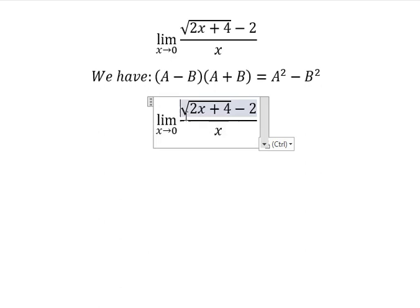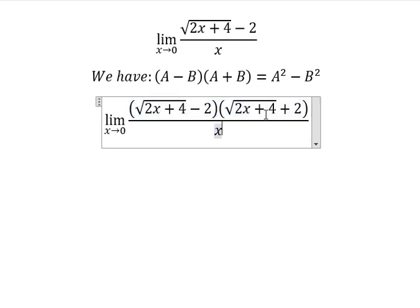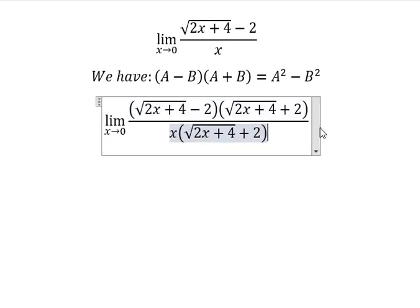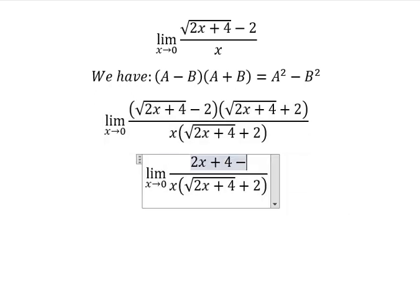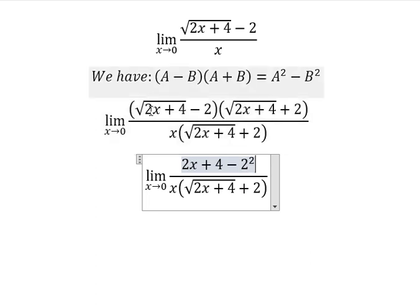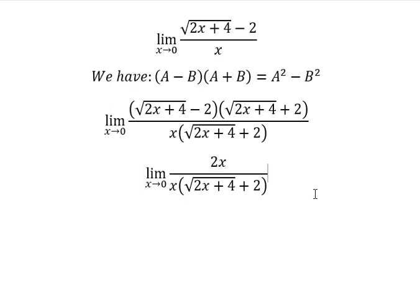We have like this. Because we have the power of two, we can cancel the square root and now we have like this.